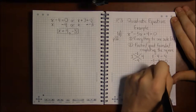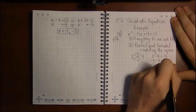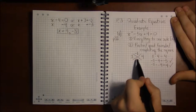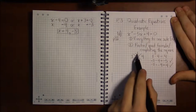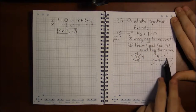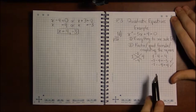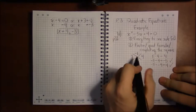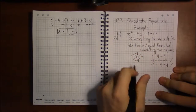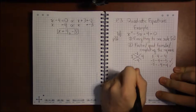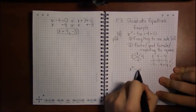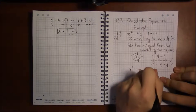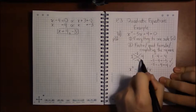Minus 1 times minus 4 equals 4, so it satisfies both conditions — adding down gives the middle number, and multiplying down gives the same as multiplying across. I use these numbers to decompose the expression for factoring by grouping: x squared minus x minus 4x plus 4.